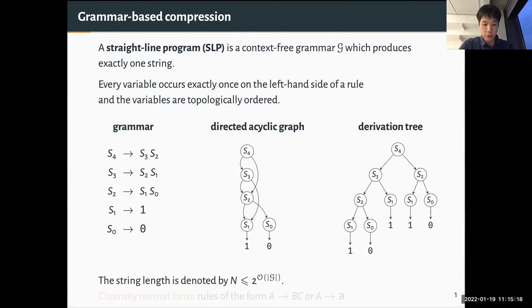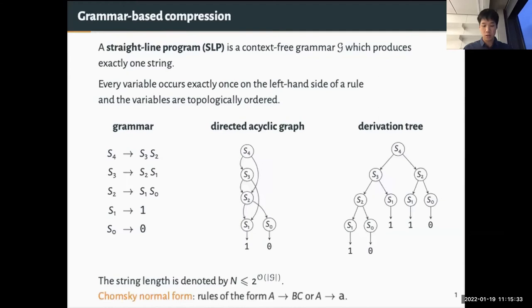I will always denote the string length by capital N, which can be up to exponential in the grammar size. For example, by repeated concatenation you can produce strings of length 2^n by only n rules. Throughout most of this talk I will assume Chomsky normal form, meaning all rules have the form A → BC or A derives a single terminal symbol.